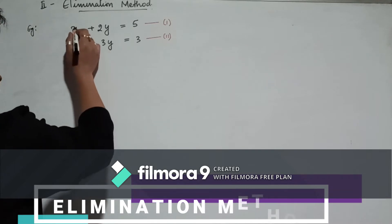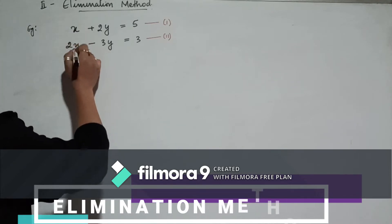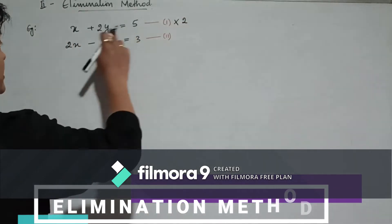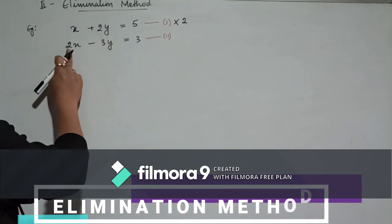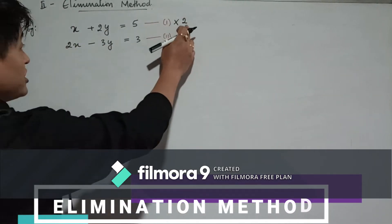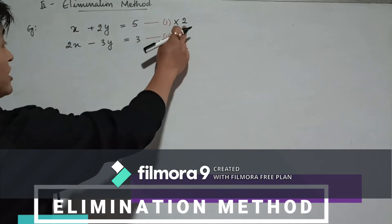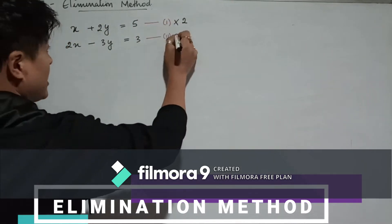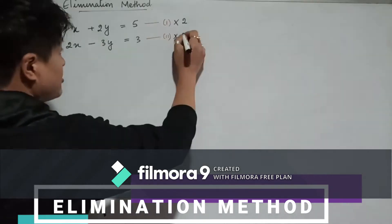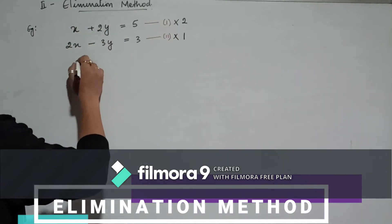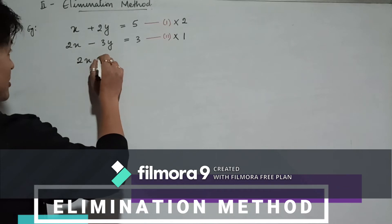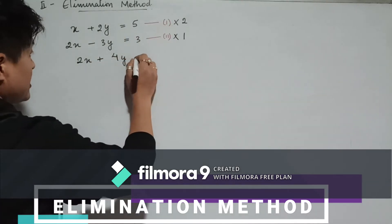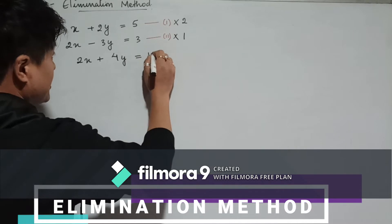To make the two x coefficients equal, we multiply equation 1 by 2. If you multiply by 2, it becomes 2x — and equation 2 also has 2x. We multiply all terms with 2: 2 times x gives 2x, 2 times 2y gives 4y, equals 2 times 5 which is 10. For equation 2, we multiply by 1: 2x minus 3y equals 3.